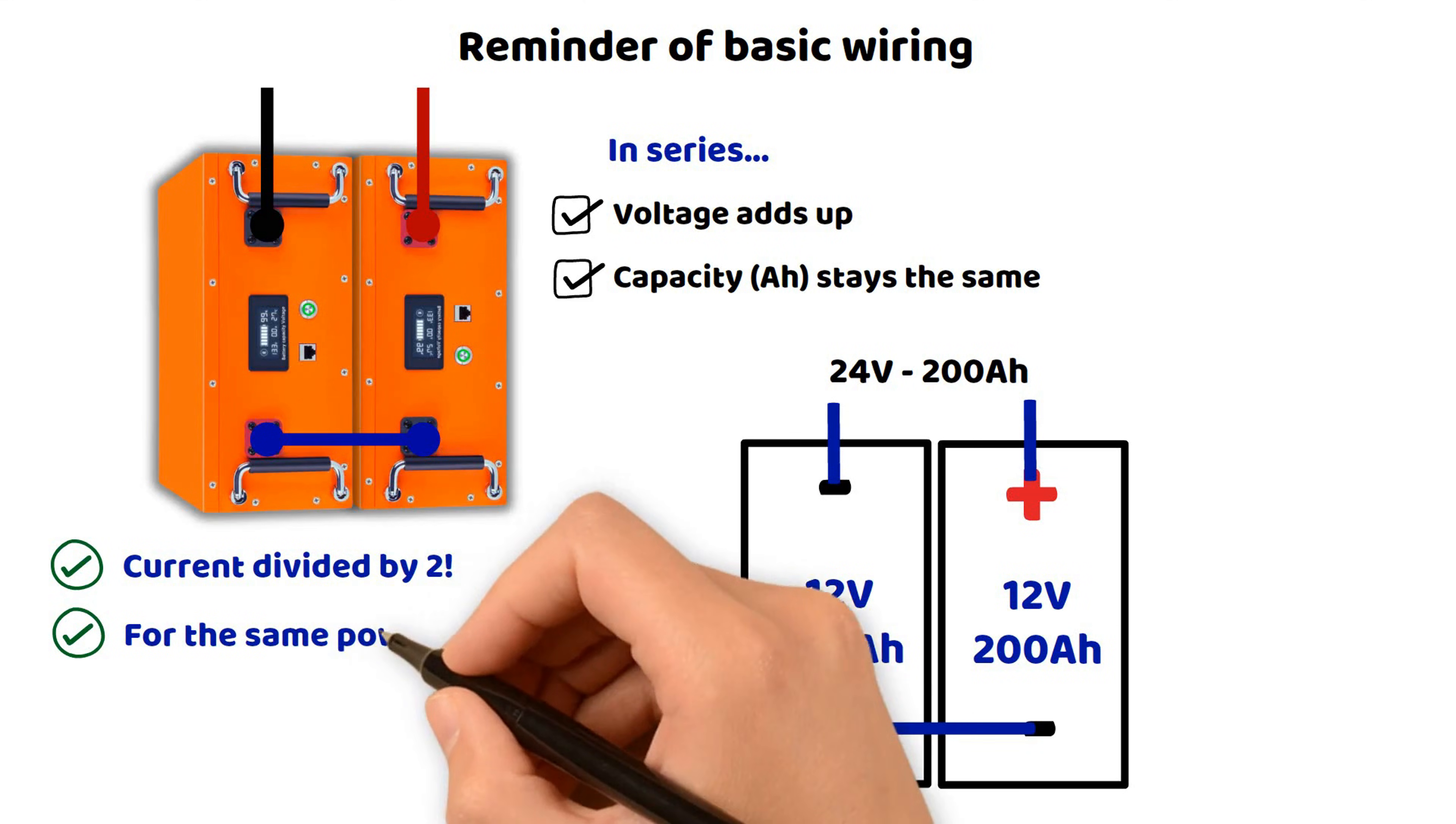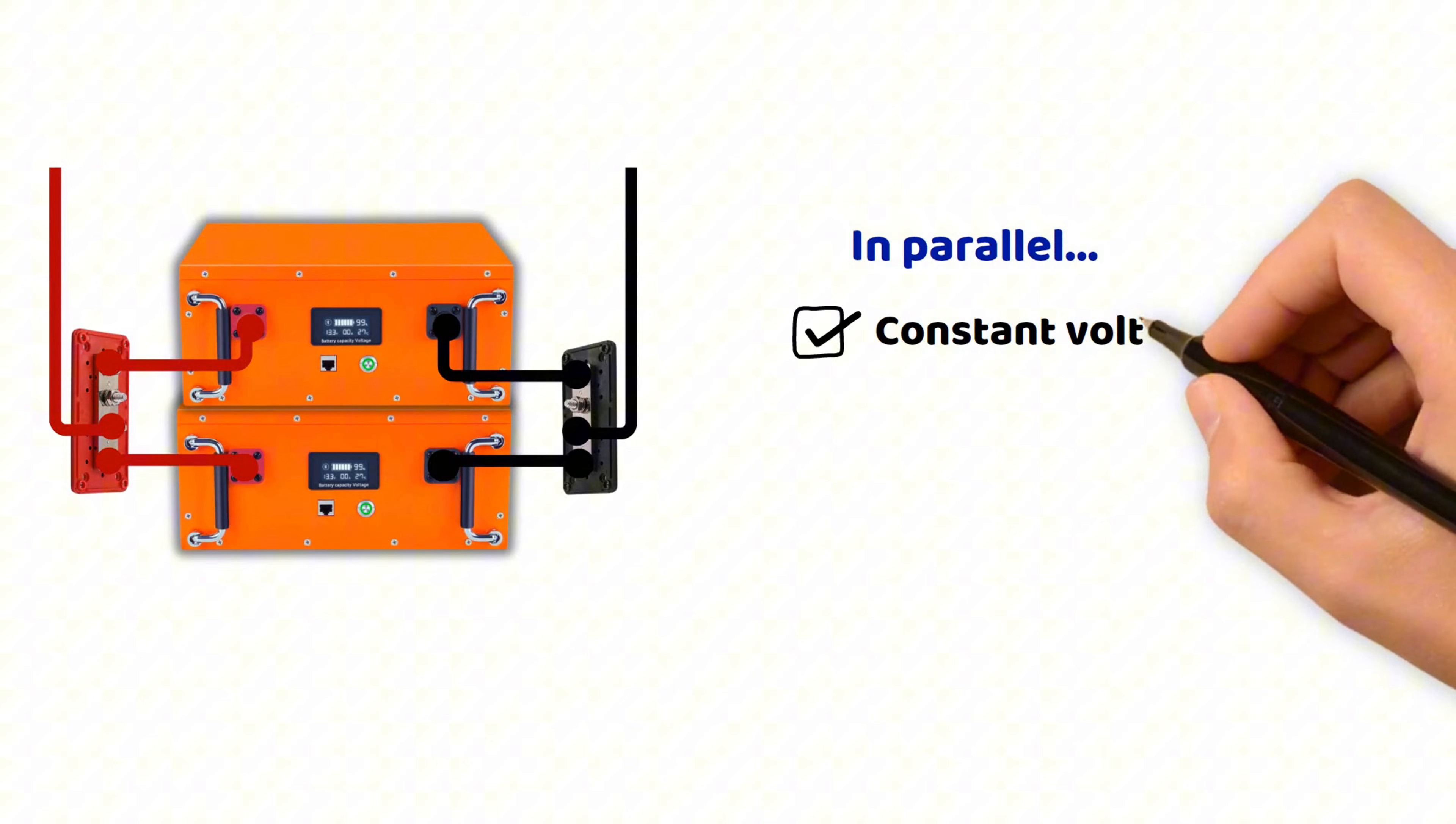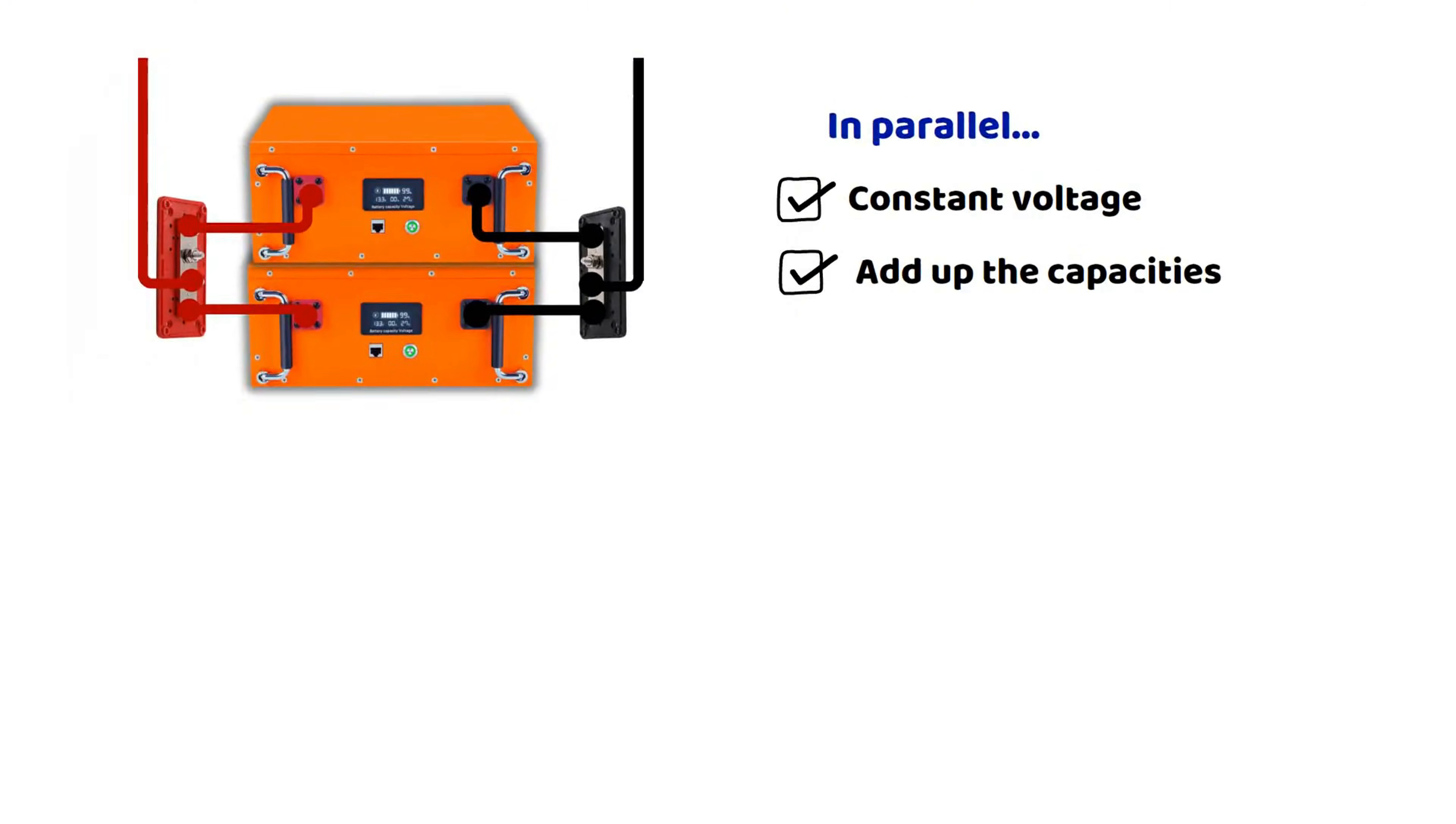Conversely, a parallel connection keeps the voltage constant but adds the capacities. For example, two batteries of 12 volts and 200 ampere hours in parallel will give a battery of 12 volts and 400 ampere hours.